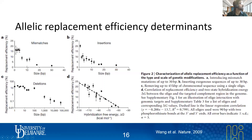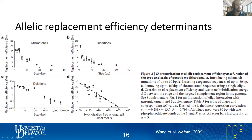If you have mismatches that exceed 10 base pairs — even 5 or 6 — you start to see a pretty steep drop-off in replacement efficiency. Similarly, if you're trying to insert bases, maybe appending a degradation tag or His-tag to your gene, the efficiency drops. We've talked about deletions in metabolic engineering, and with X and Y axes on log scale, you can clearly see how much your deletion strategy can affect replacement efficiency.